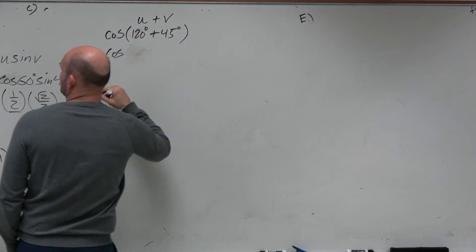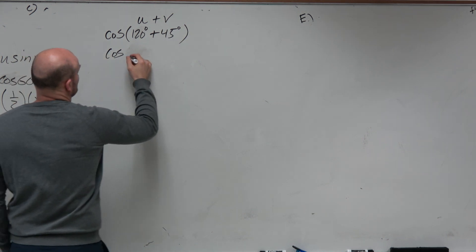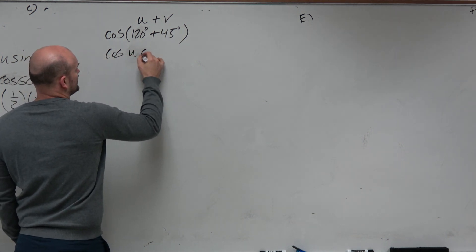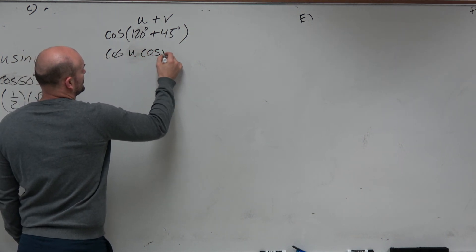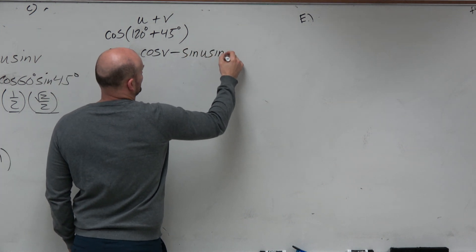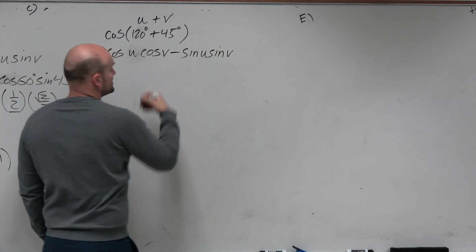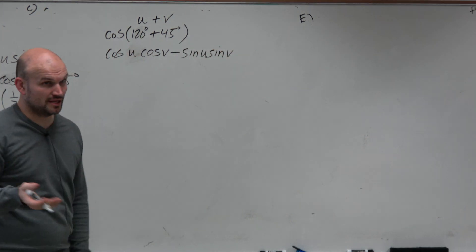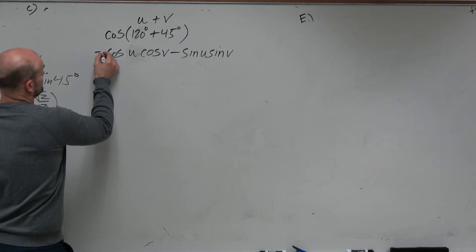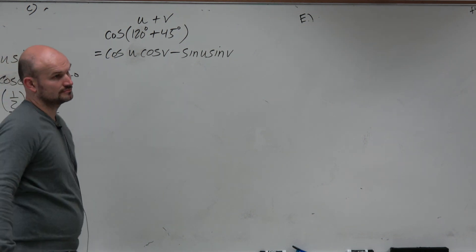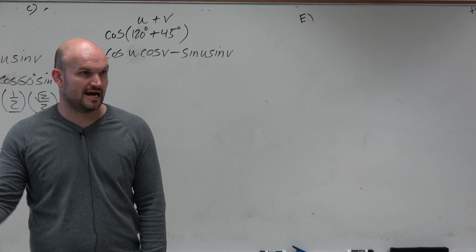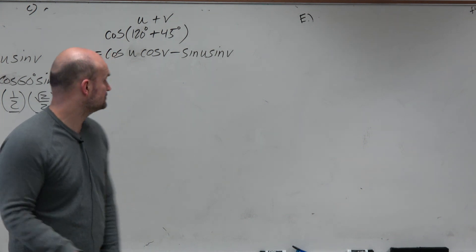Oh, I didn't write that out. All right, so using that — it's going to be cosine of u times cosine of v, minus the sine of u times sine of v. All right, so using our formula, we can apply that, and now we just plug it in.